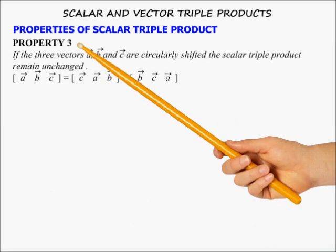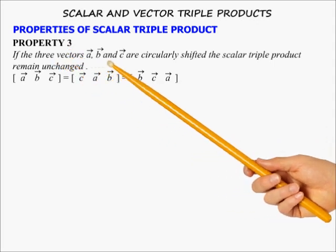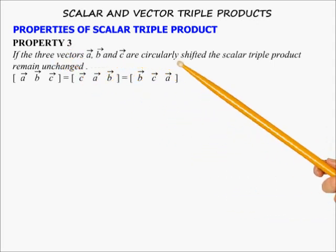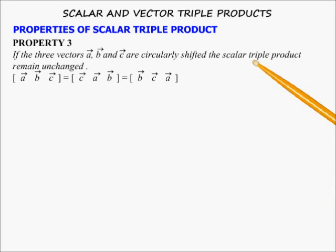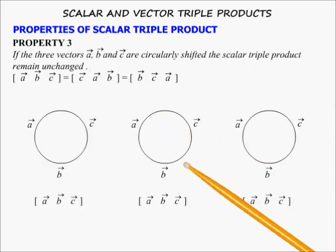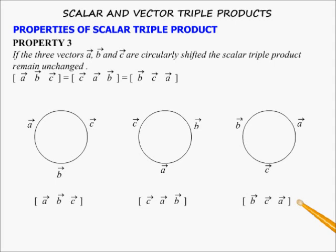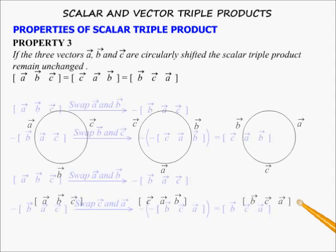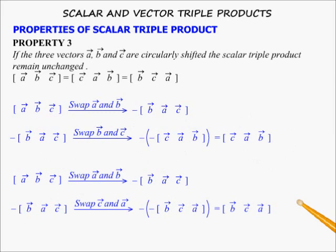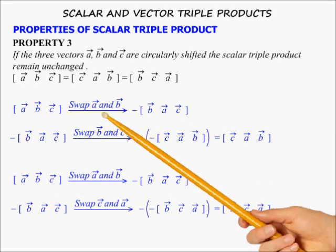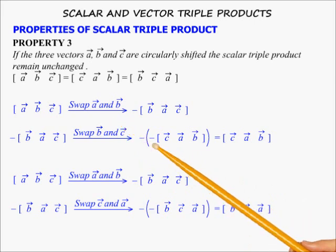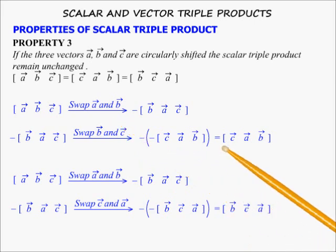Property 3: If three vectors A, B and C are circularly shifted, the scalar triple product remains unchanged. Rotating [ABC] gives [BCA], and the triple product remains unchanged. Rotating again gives [CAB], and the triple product again remains unchanged. This may be proved by the fact that a circular shift is realized by swapping two vectors twice, so double negation leaves the triple product unchanged.